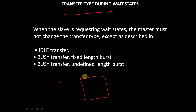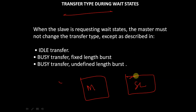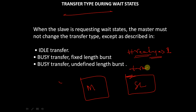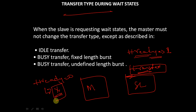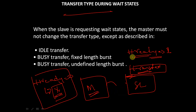We have a master and a slave. The slave gives responses to the master with the help of the signal HREADY. If HREADY is high, that is equal to 1, then the slave is ready for any type of transfer. When HREADY is equal to 0, the slave is not ready for the transfer and cannot send or receive any data.